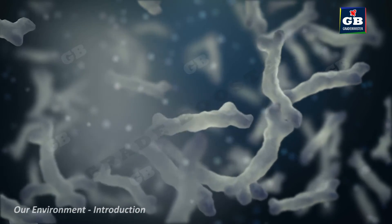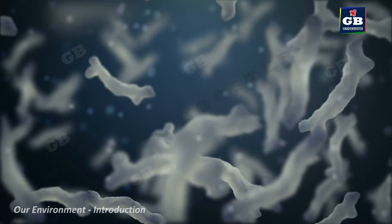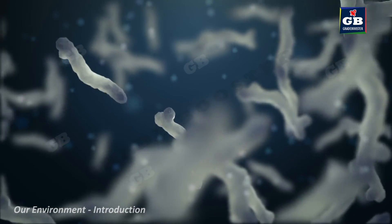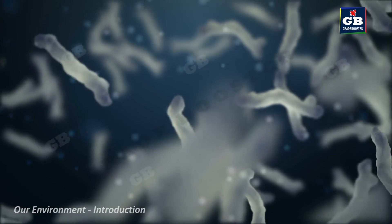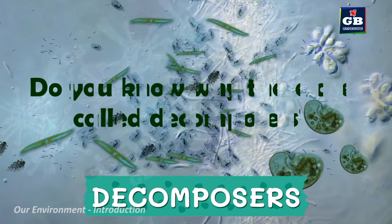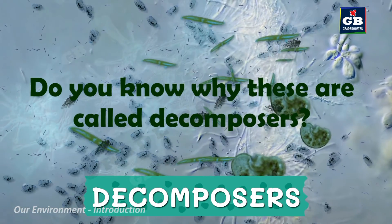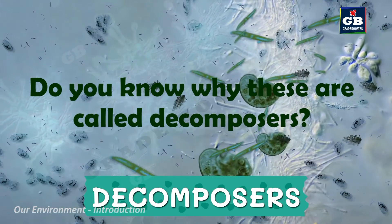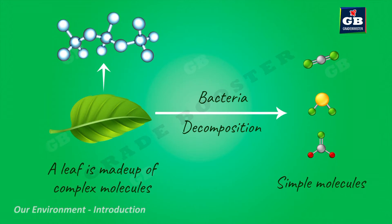The organisms that feed on the dead remains of plants and animals are called decomposers. These organisms decompose the complex organic substances into simple substances, and this process is called decomposition.